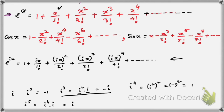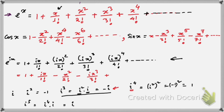So from the expansion of e to the power ix, the first term remains 1, the second term remains ix by factorial 1, the third term becomes minus x squared by factorial 2 (since i squared is minus 1), the fourth term becomes minus ix cubed by factorial 3 (since i cubed is minus i), the fifth term becomes plus x to the power 4 by factorial 4, and then plus ix to the power 5 by factorial 5, and so on.